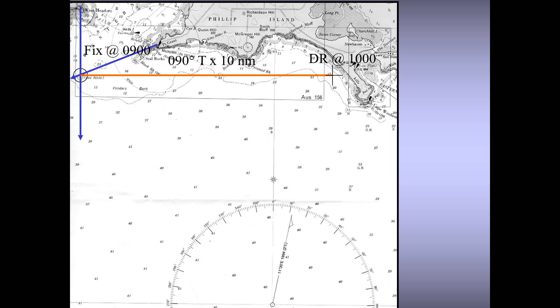the vessel would have reached the DR position marked by the cross. Dead reckoning is the process of determining the position of the vessel by the vessel's course, speed, and time steamed. The DR position is marked on the chart as a cross or plus sign at the end of the course line. This assumes the vessel will steer the course it intends to steer and there is no effect of wind or leeway on the ship's course.